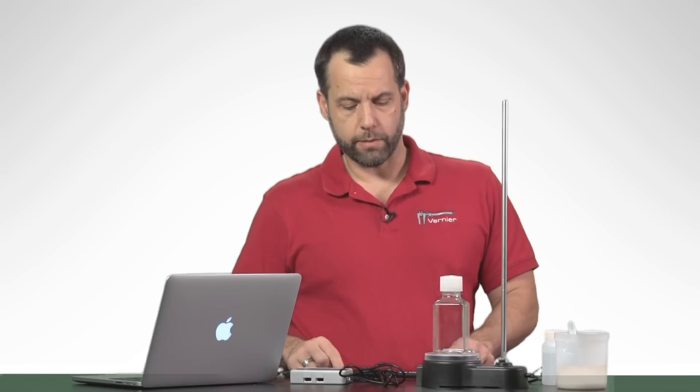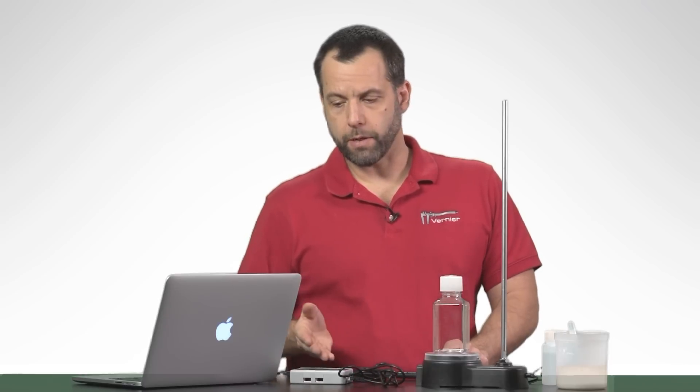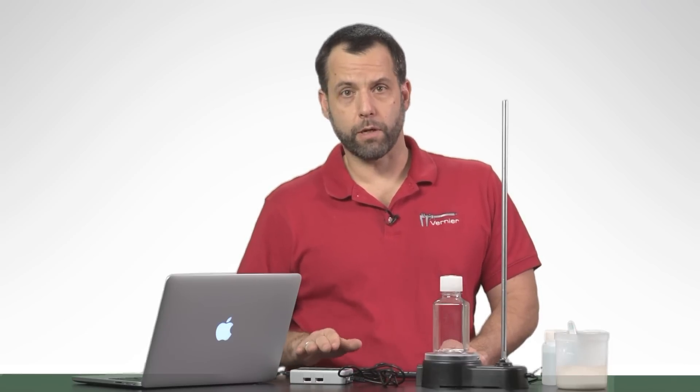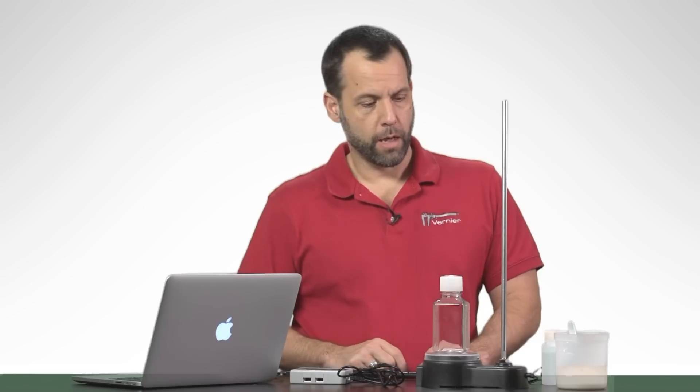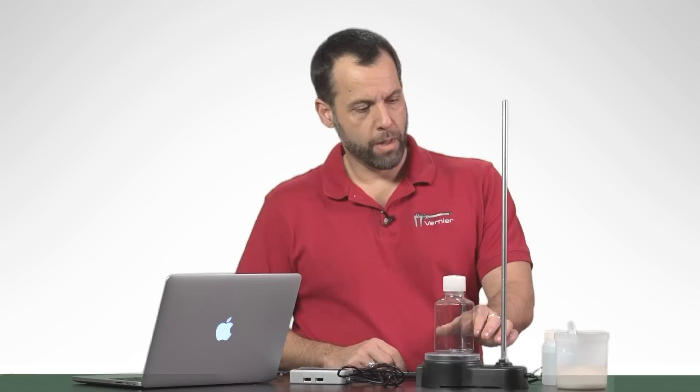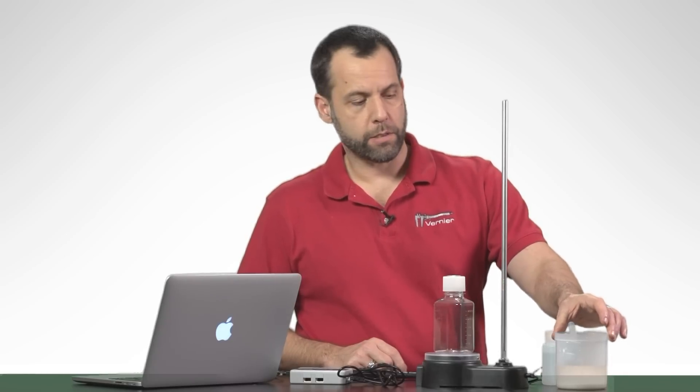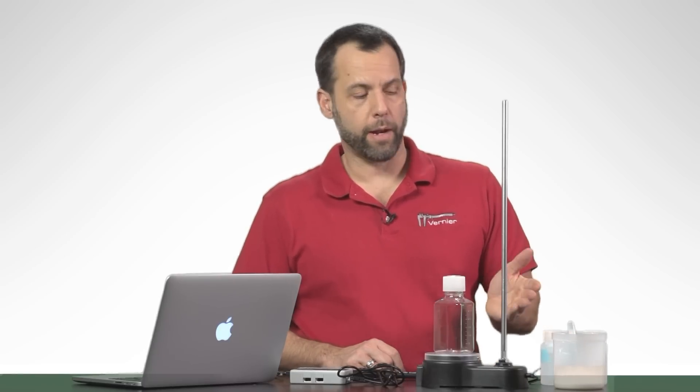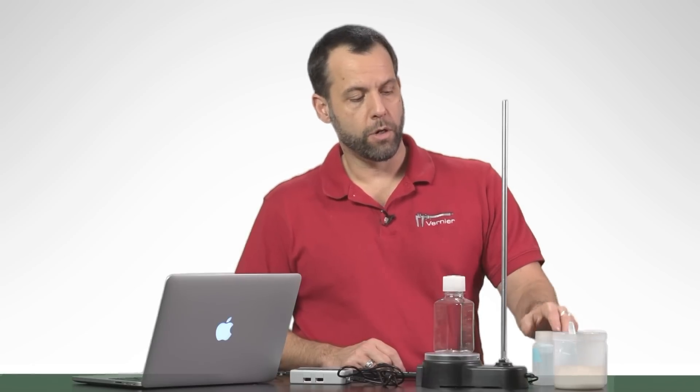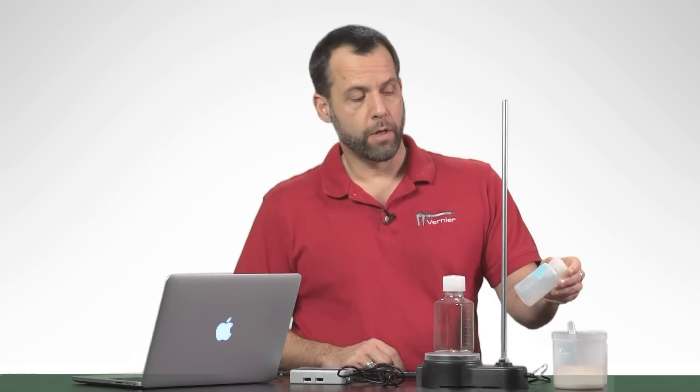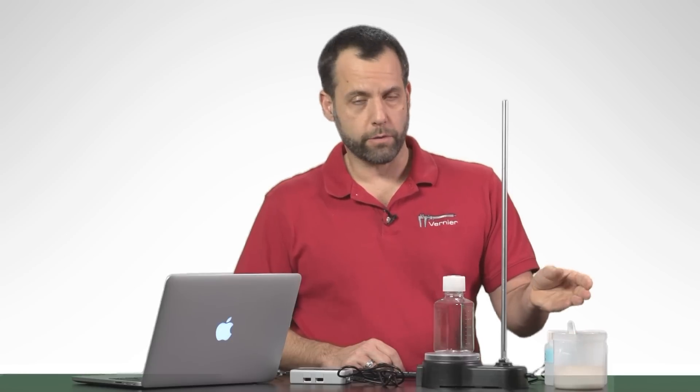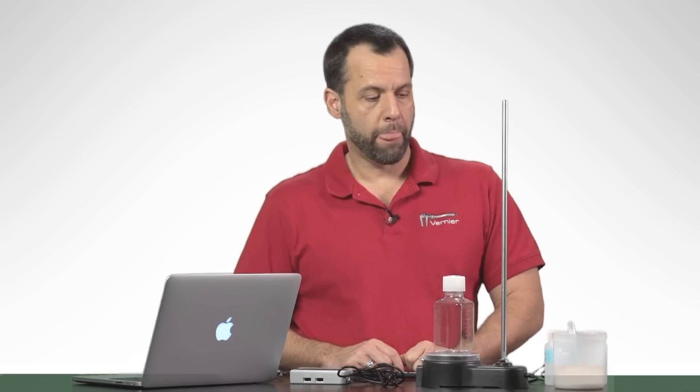All that you need is a Vernier ethanol gas sensor, something to collect the data with—in this case I'm using a LabQuest Mini and a computer—and then my little fermentation chamber, which is just a little Nalgene bottle. I have some yeast that I've mixed up and a solution of glucose. The actual lab instructions will tell you how to mix up the proper solution of yeast and glucose, fructose, or lactose solution, whatever you want. I'm just going to show you how to quickly do this experiment.